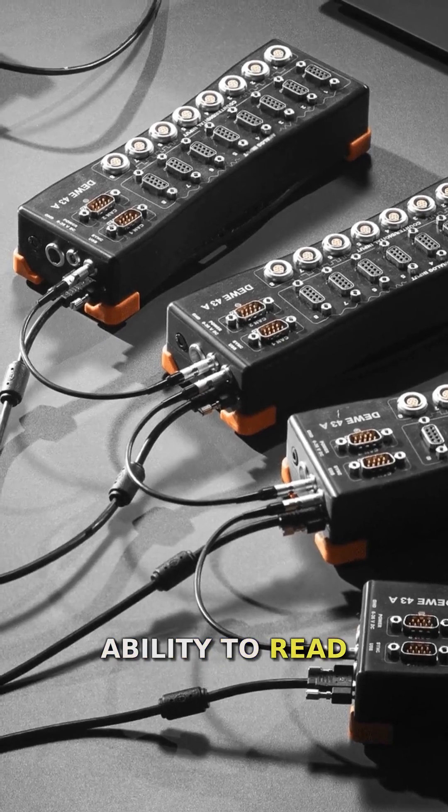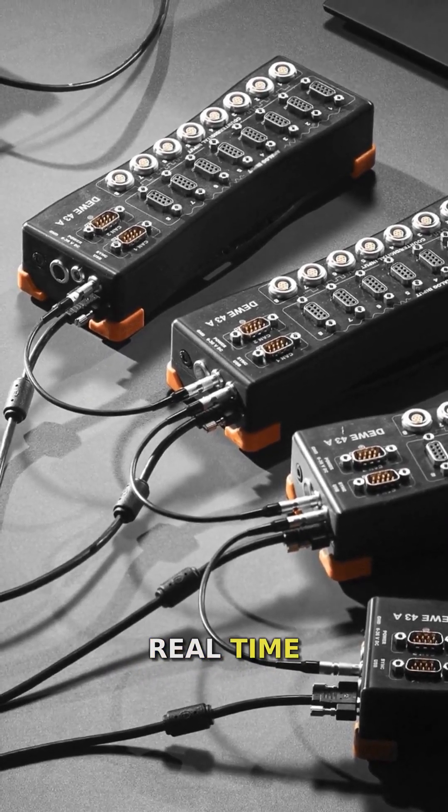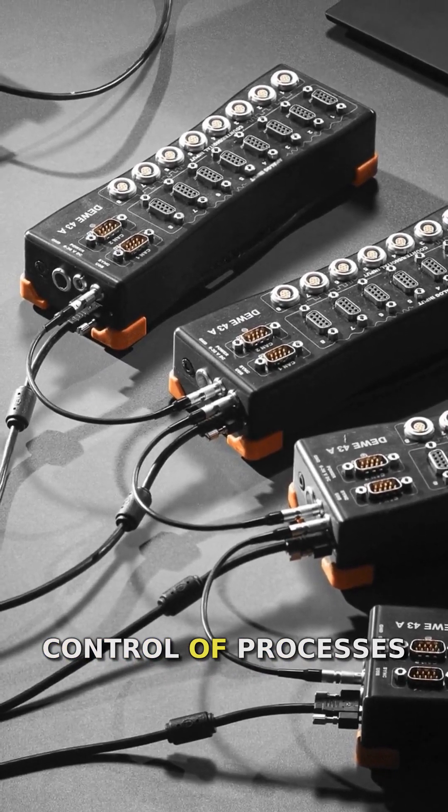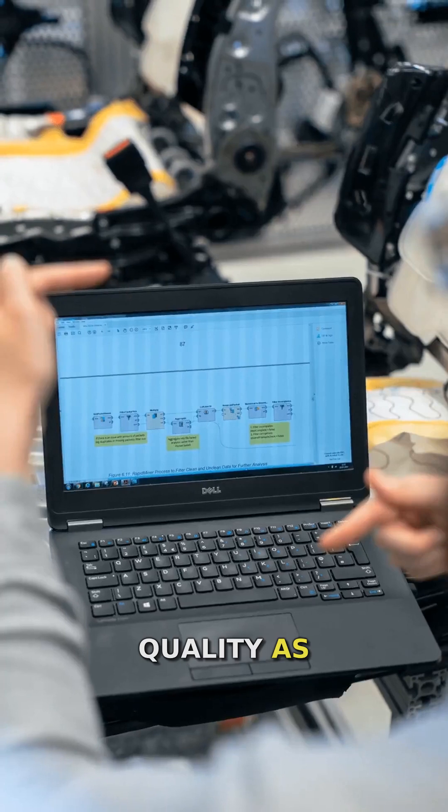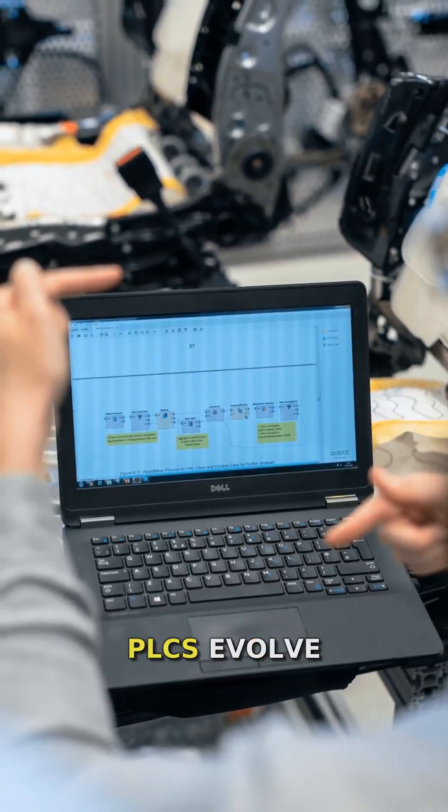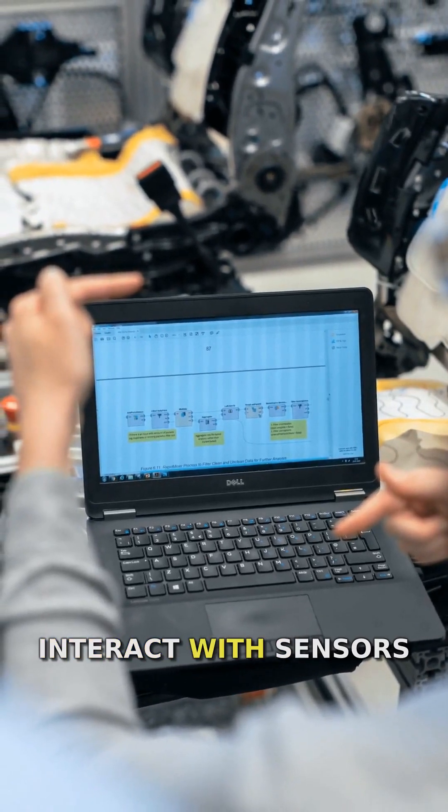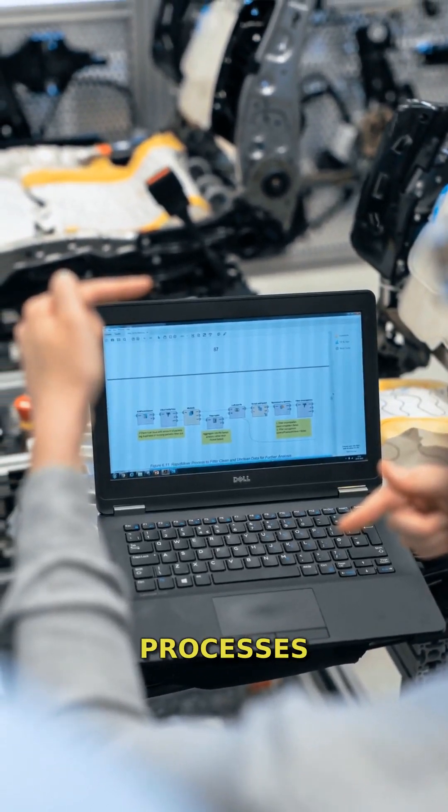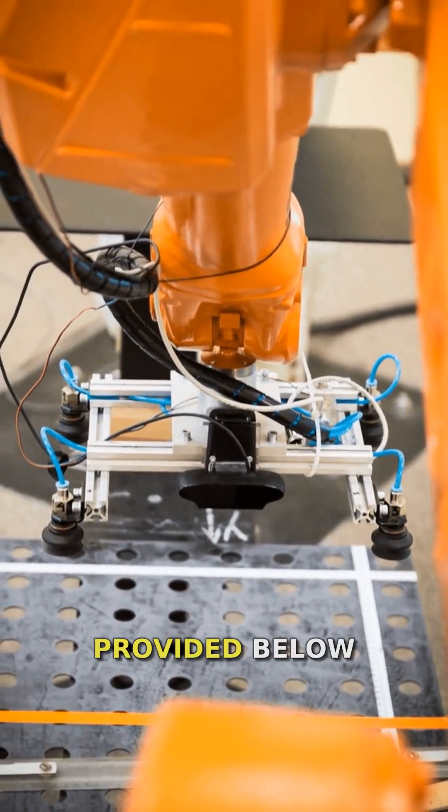PLCs' ability to read sensors is crucial in industrial automation. It allows for real-time monitoring and control of processes, improving efficiency, safety, and product quality. As technology advances, PLCs evolve, offering even more sophisticated ways to interact with sensors and control industrial processes. Additional information can be obtained from the link provided below.